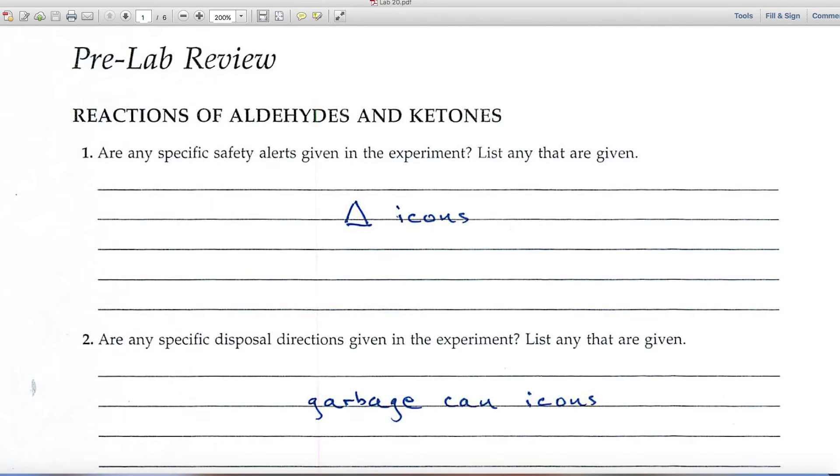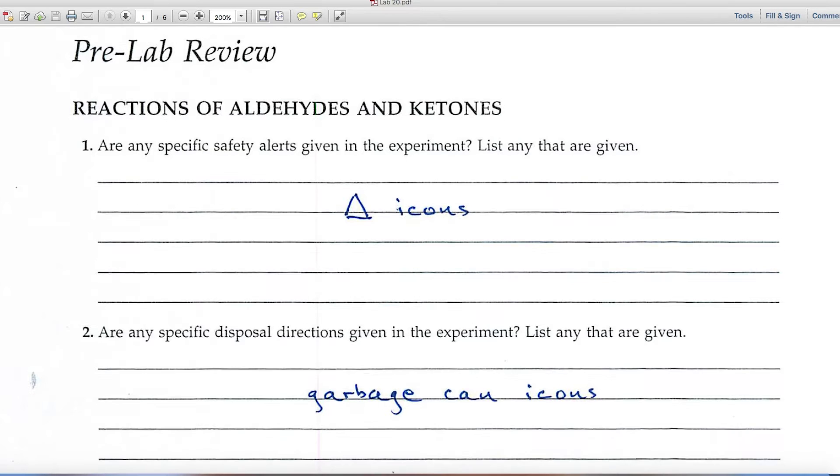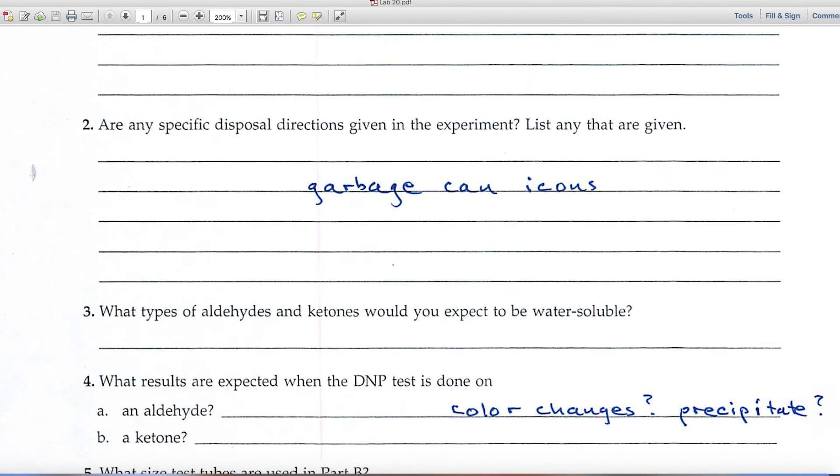Question number one always begins with this question about specific safety alerts, and again you'll look for the triangle icons in your reading. Question number two, disposal directions, you'll look for the garbage can icons in your reading.